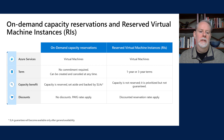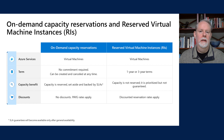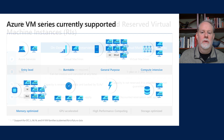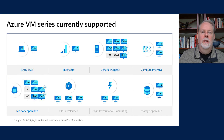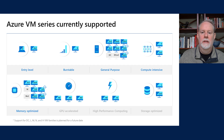On-demand capacity reservations is not a discounting mechanism — typical usage rates will apply. If you want discounts, you can combine on-demand capacity reservations with RIs and receive the best of both worlds: a term-based discount on your consumption, plus an SLA on the capacity you need to run your business. Azure's goal is to support all VM series. At this stage of preview, we are supporting primarily general-purpose virtual machines: entry-level AV2s, burstable B series, general-purpose D series, compute-intensive F series, and memory-optimized E series.